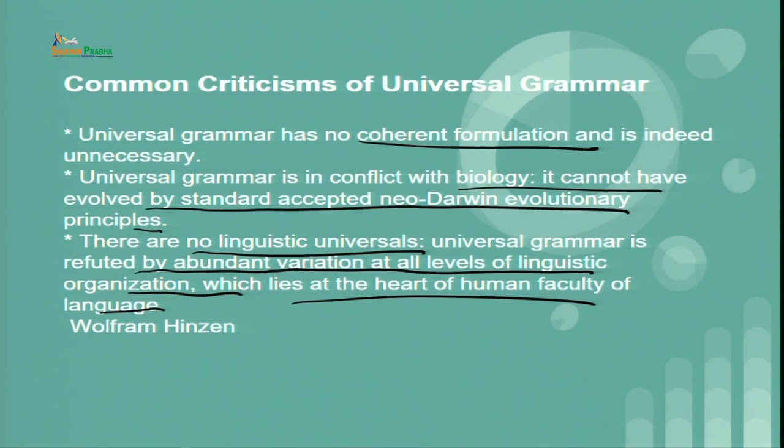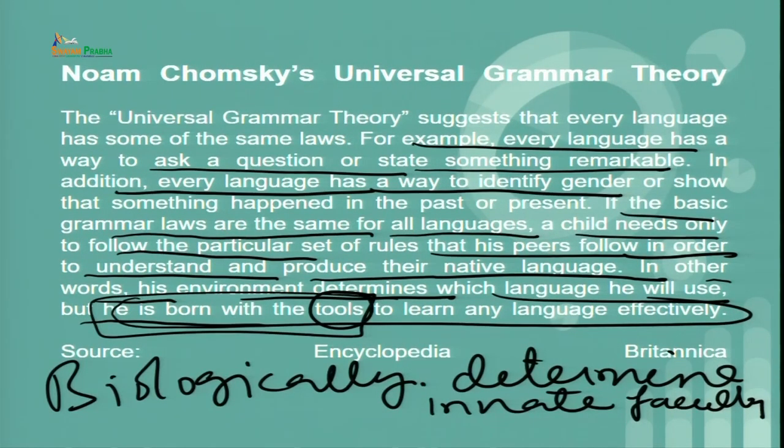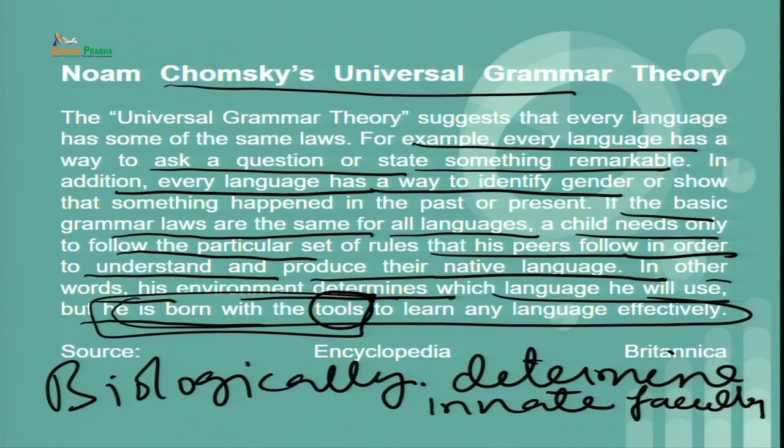Despite criticisms, the universal grammar theory is widely accepted across the globe. Chomsky does not say that language cannot be learned or acquired — he just says that we have the innate capacity to learn. It is just that we need to get exposed to it, and by the time we get exposed to it, we eventually develop it, making it easy to acquire the language. When it comes to learning, on the contrary, a child needs to go through formal education, which will help him develop the rules and learn them consciously to get a command over the language.